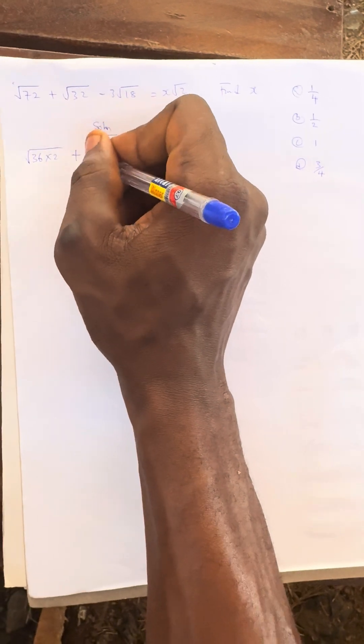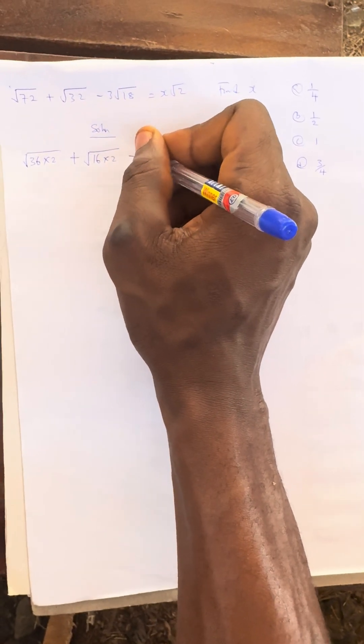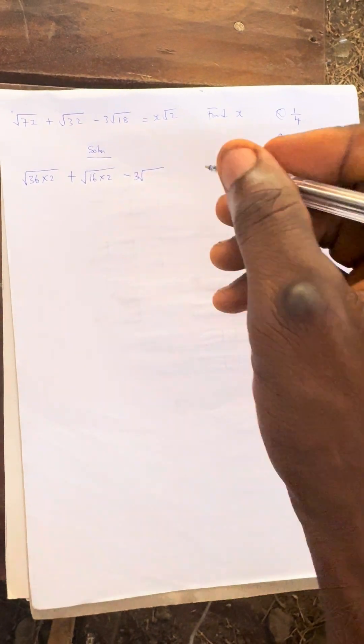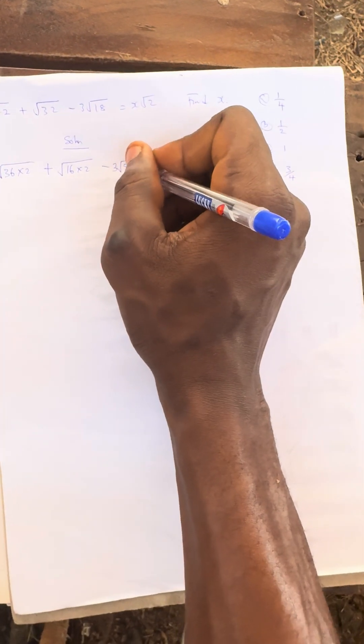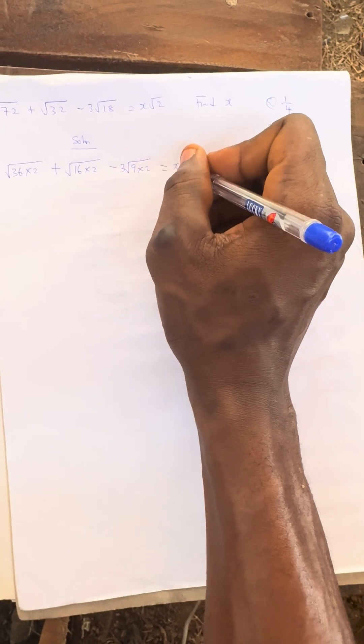Then √32 can be broken down into √(16 × 2), so we have √(16 × 2) - 3√(18). We can have 18 as √(9 × 2), so it equals x√2.